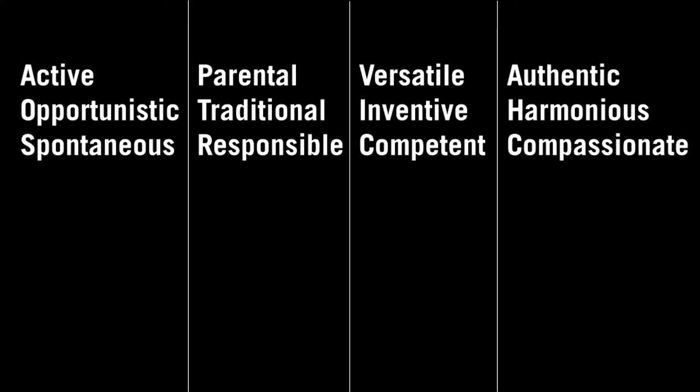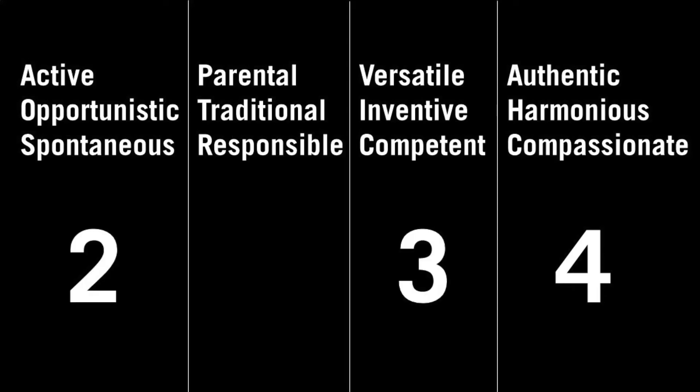Let's do the first question together. On screen you'll see four groups, each with three words. For example, the first group has active, opportunistic, and spontaneous in the first column. You're going to look at these groupings and see which group is most like you. Maybe I decide the group most like me is authentic, harmonious, and compassionate — so in that column I write the number four. Four is the highest number since there are four options. You then look again and decide which group is next like you, then two, then one for the group least like you.